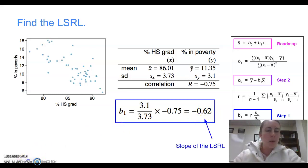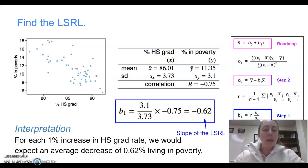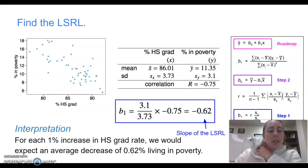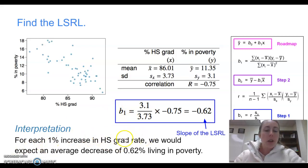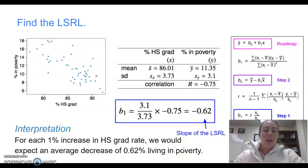Let's pause and interpret that slope. For every 1% increase in the high school graduation rate, we would expect an average decrease of 0.62% of the population living in poverty. So the more students that graduate from high school, the fewer families are living in poverty.